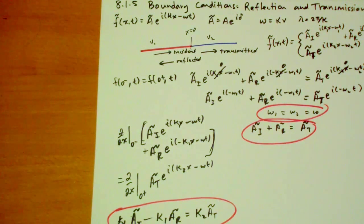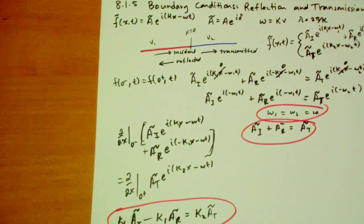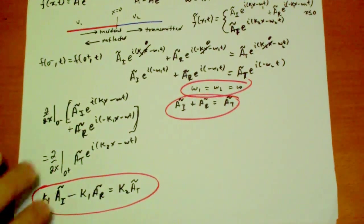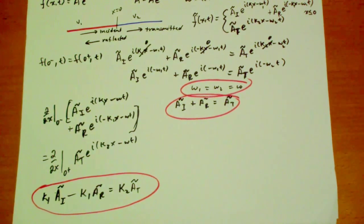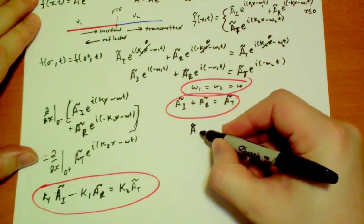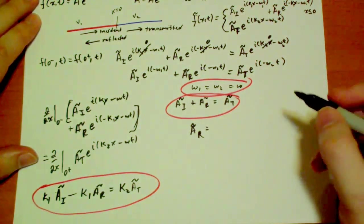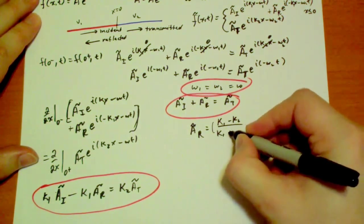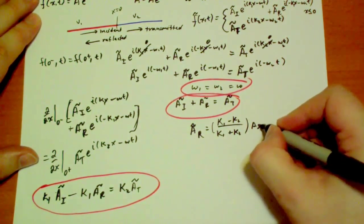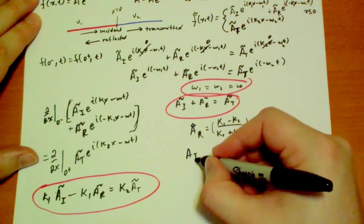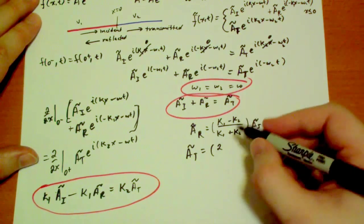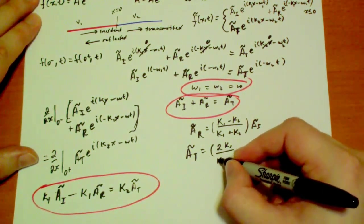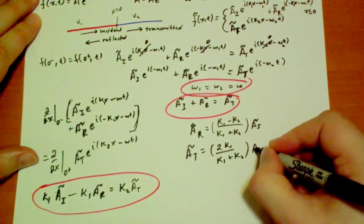Now using simple algebraic manipulations, which hopefully you can do this on your own and I encourage you to, it's a little bit of fun exercise, reminding yourself of what you used to know in junior high school, we get the surprising result that the reflected amplitude is equal to kappa 1 minus kappa 2 over kappa 1 plus kappa 2 of the incident amplitude. And the transmitted amplitude has to equal 2 times kappa 1 over kappa 1 plus kappa 2 of the incident wave.